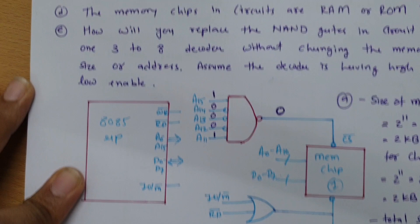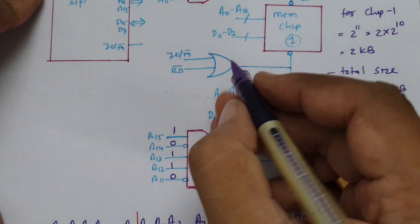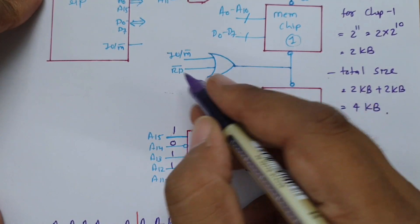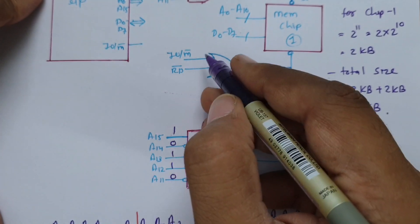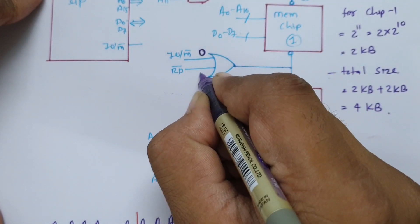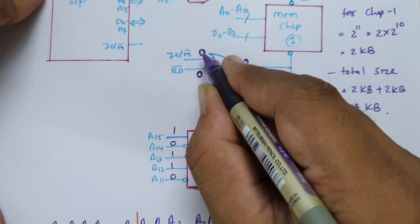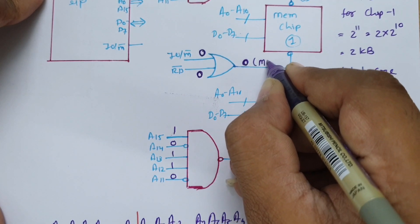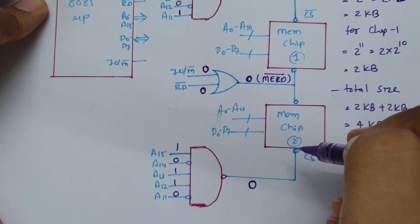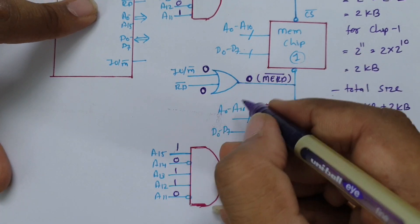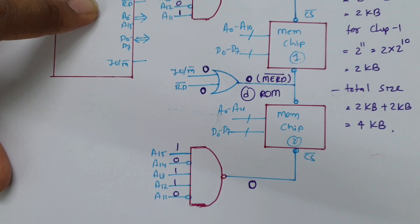For question D — is the memory chip RAM or ROM? We need to look at the control signal. There is an OR gate here, and its inputs are the memory bar signal and the read bar signal. If memory bar is 0 (memory signal active) and read bar is 0 (read signal active), the output is 0, which indicates a memory read operation. Since we only have a memory read control signal, this is ROM — read only memory.